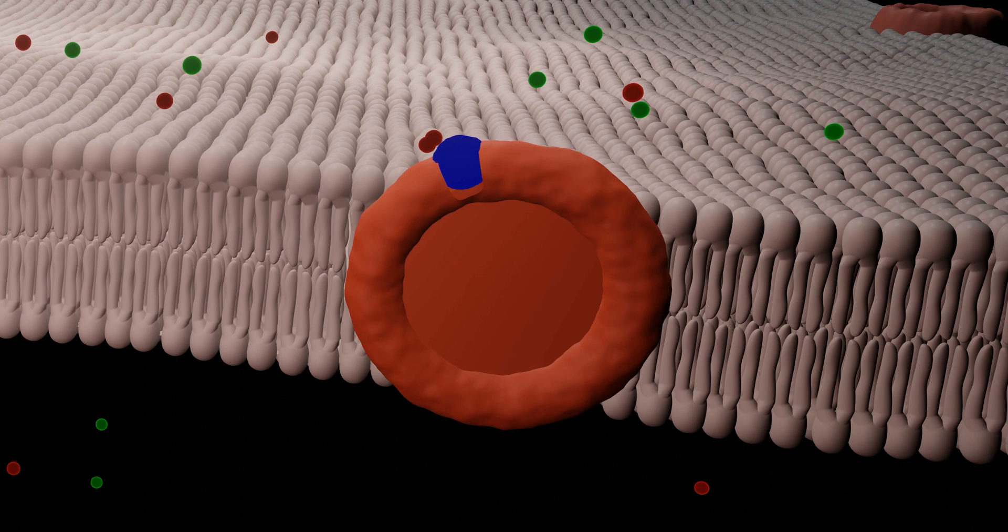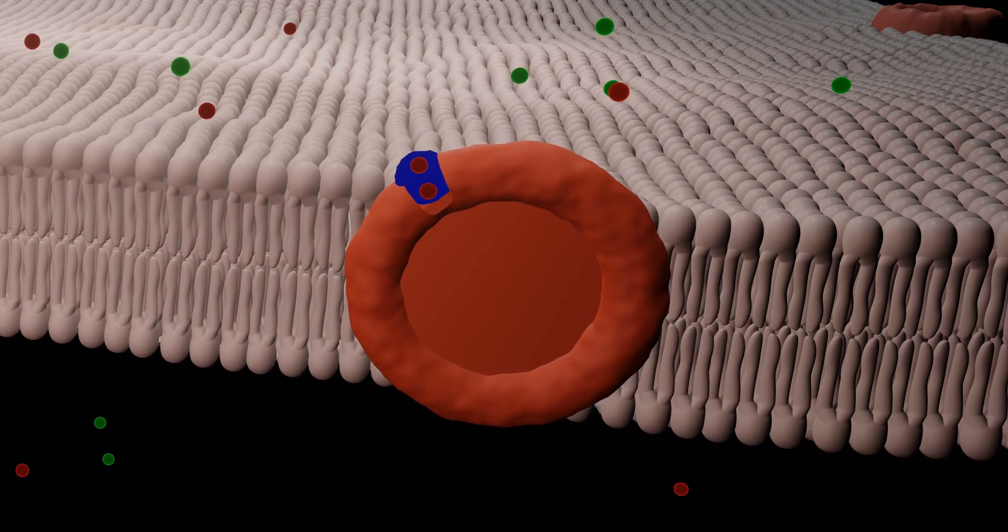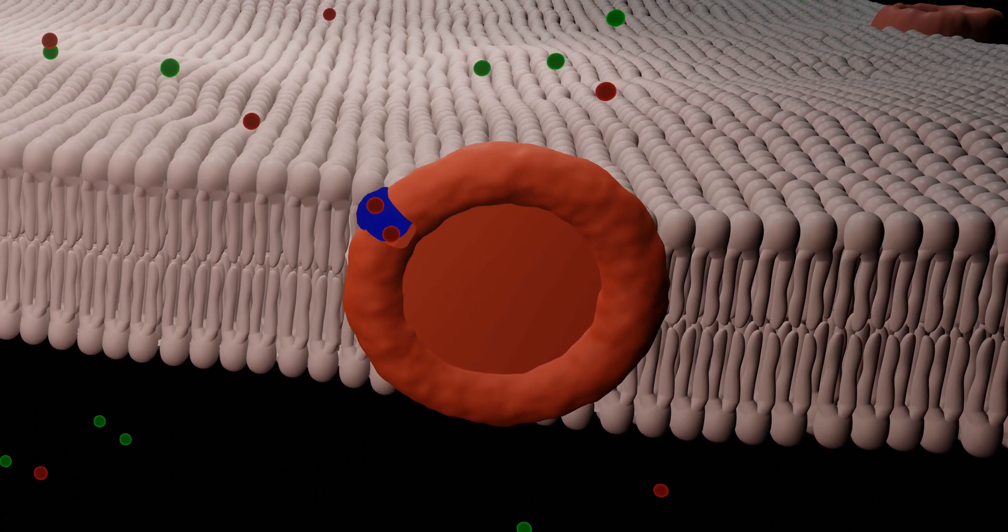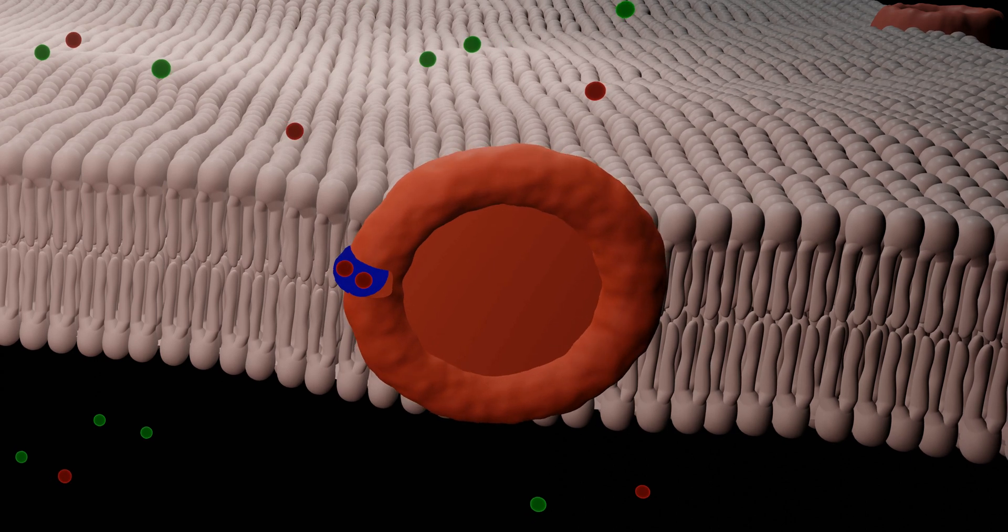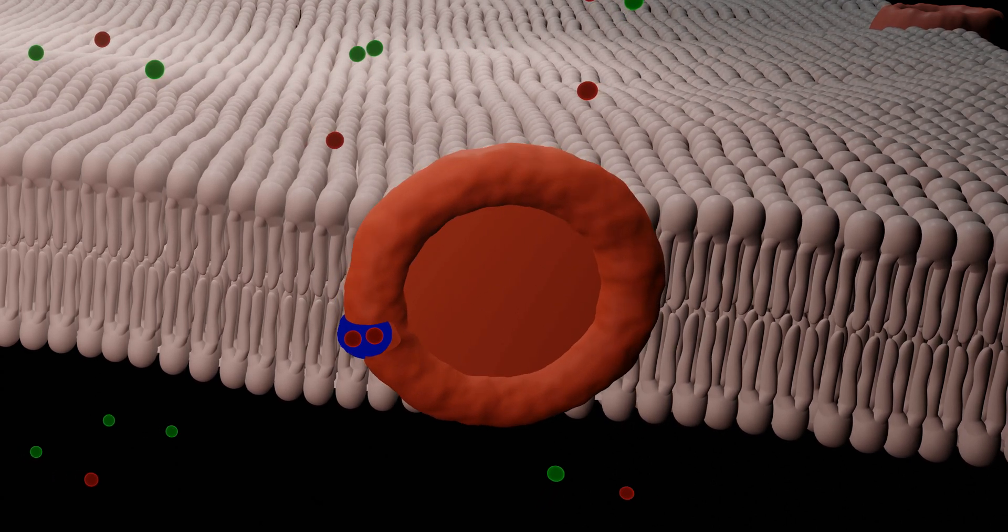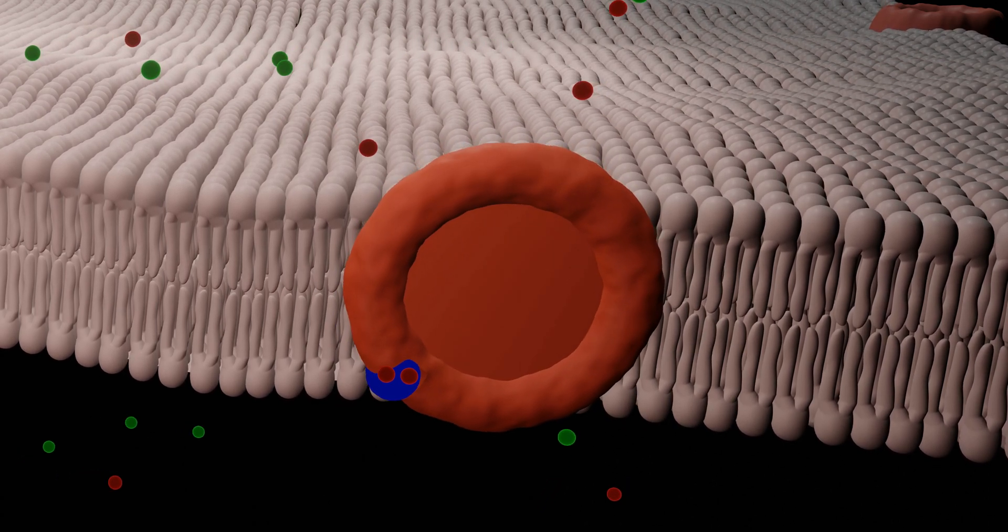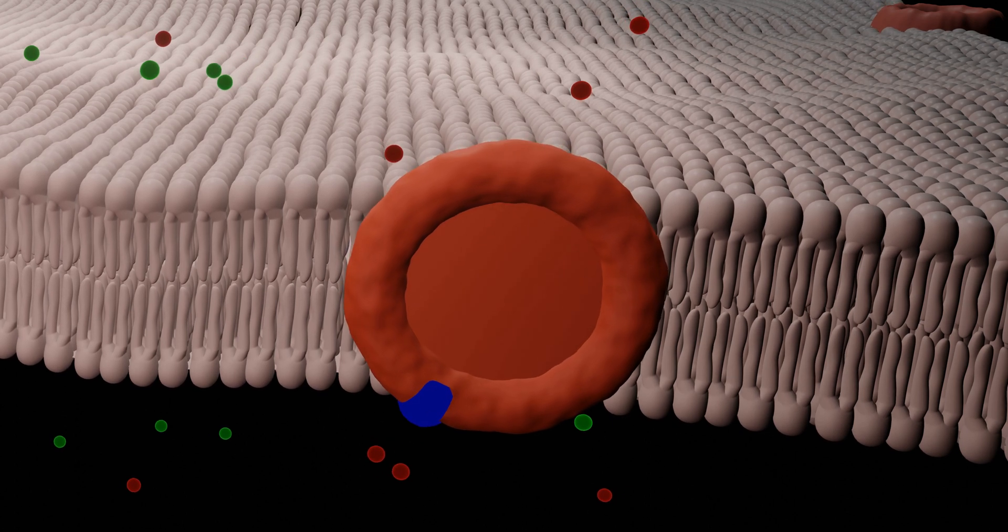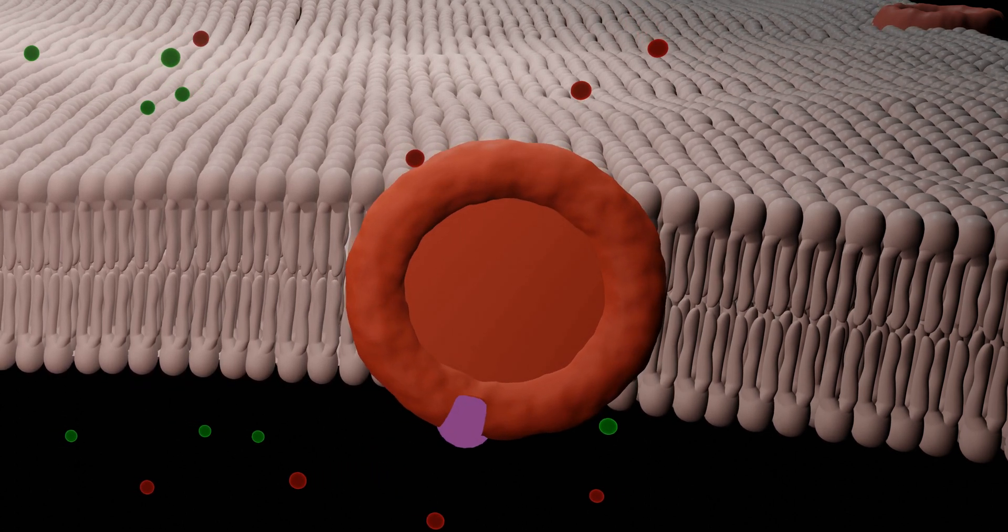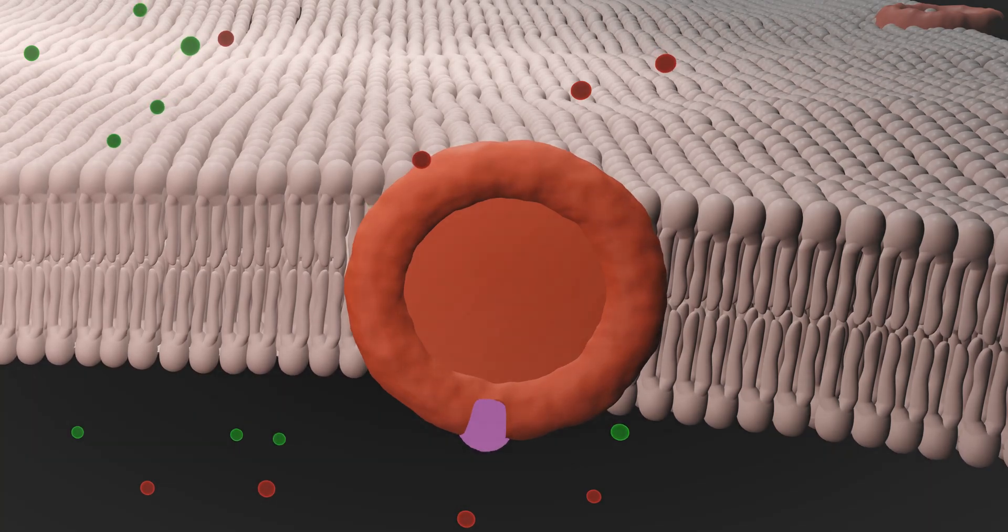The transporter X carries K+ ions from the external side of the membrane towards the internal side. At this stage, the transporter X detaches from the K+ ions, which are released inside, and takes back its initial form Y, which attaches again to Na+.